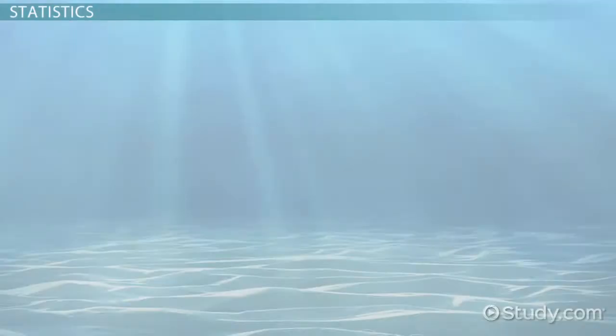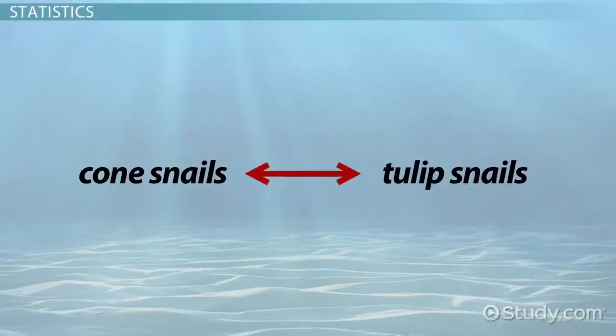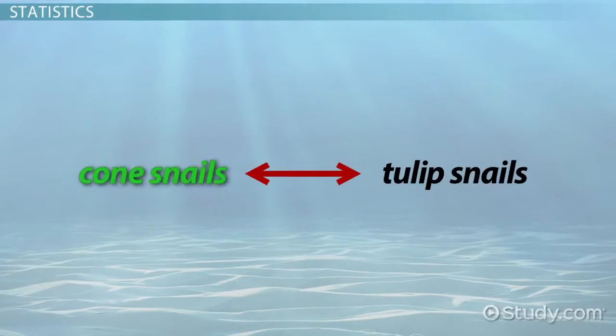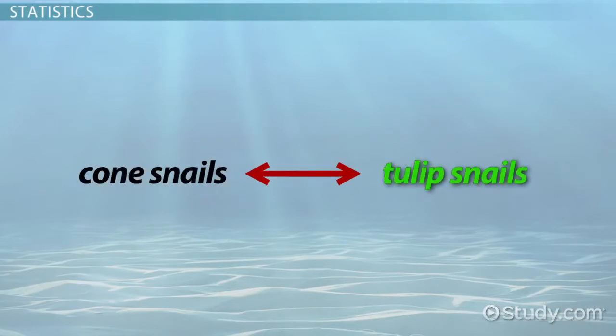For example, a marine biologist might want to know if there is a positive statistical correlation between the presence of cone snails, a common predator in marine habitats, and tulip snails, who are often preyed upon by larger snails.